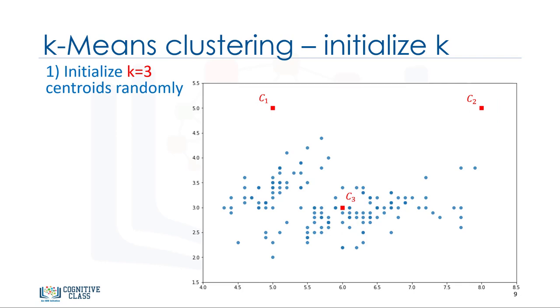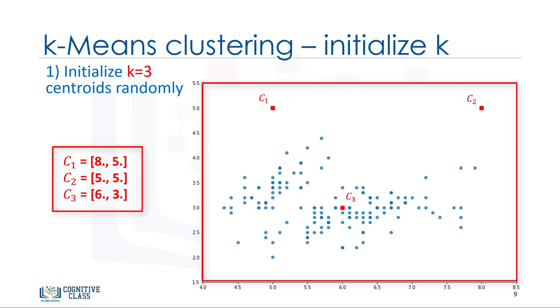There are two approaches to choose these centroids. One, we can randomly choose three observations out of the data set and use these observations as the initial means. Or two, we can create three random points as centroids of the clusters, which is our choice that is shown in the plot with red color.